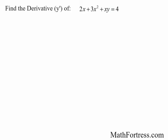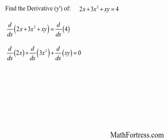So we have an implicit function. The first step is to take a derivative of both sides. Distributing the derivative sign, the derivative of 2x is just equal to 2, and the derivative of 3x squared is just equal to 6x. Now here, we need to notice that we actually have two functions, so we need to apply the product rule.